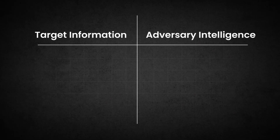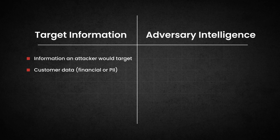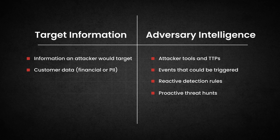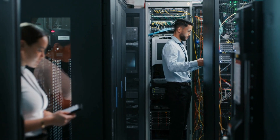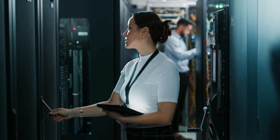To model how an attacker may target your assets, you can pivot off of target information or adversary intelligence. Target information is information an attacker would go after — such as customer data that includes financial information or PII. Add these two categories to your model: adversaries, and the tools, TTPs, or events an adversary may use or trigger when attacking your systems. You break events into reactive detections and proactive threat hunts and add them to your model. You can go as deep as you want into this layer, using attack trees to visualize the steps the attacker would take, or using PASTA to assess vulnerabilities that may arise in the software you use. Start at the top, add your key assets, then work down to add granular details about subsystems, security controls, and software versions. Once complete, your threat model can fulfill various use cases.